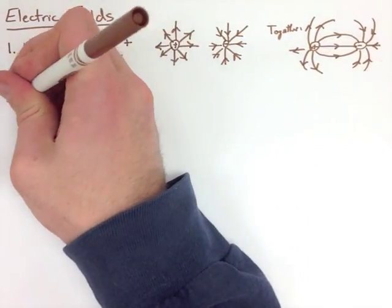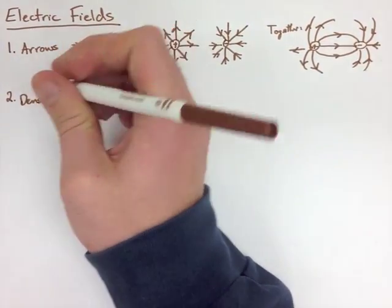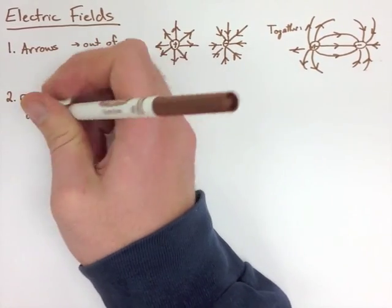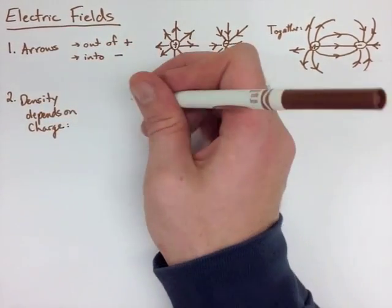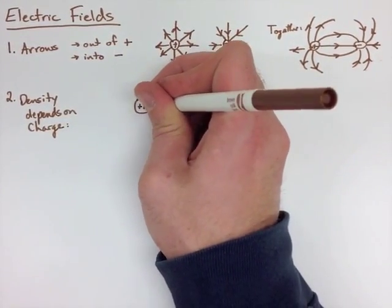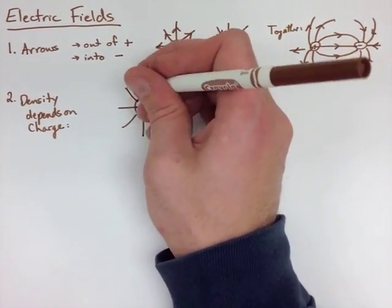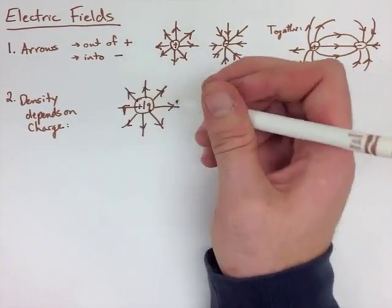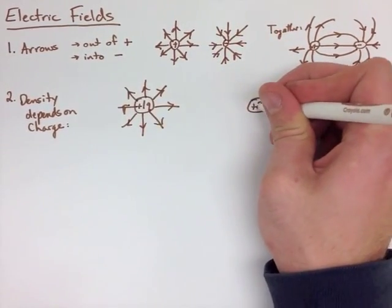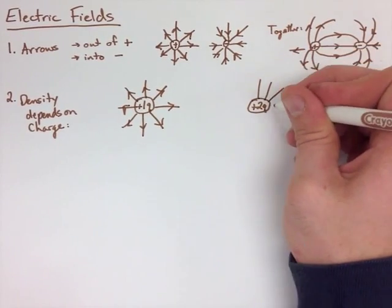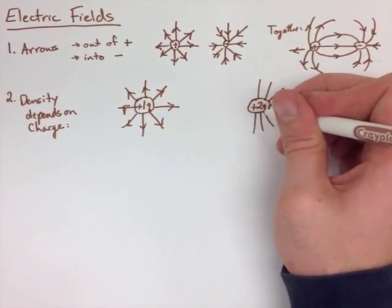Now, the density of these fields, or how many arrows there actually are, depends on the charge. So let's say we had a 1Q charge, and it had 8 arrows. If we then had a 2Q charge, or twice the charge, it would have twice the amount of arrows. So it would then have 16 arrows instead of 8.